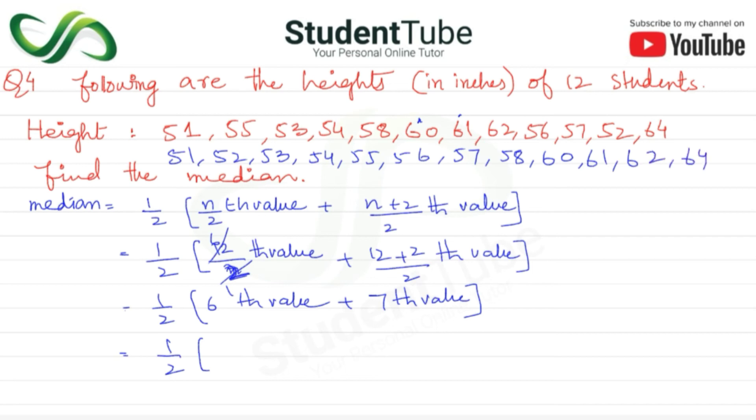Okay, data is arranged. Now 6th value and 7th value. So 1, 2, 3, 4, 5, 6 - this is the 6th value, this is the 7th value, meaning 56 plus 57. So 1/2, adding these two gives 113. So 113 upon 2, this becomes 56.5.